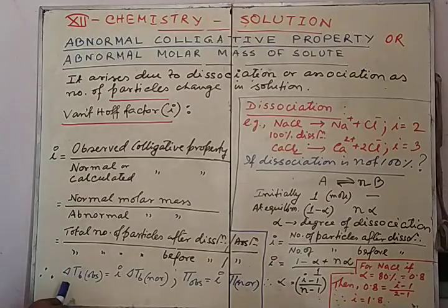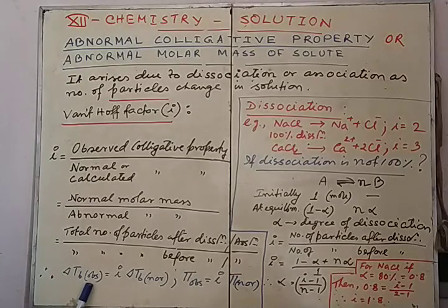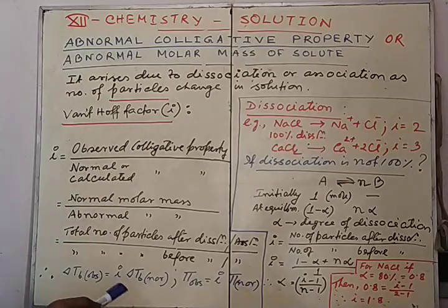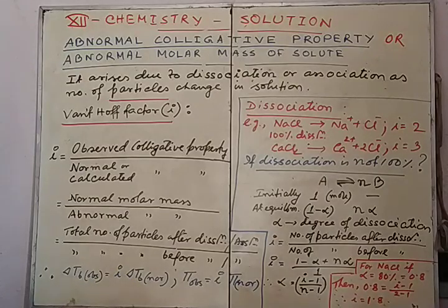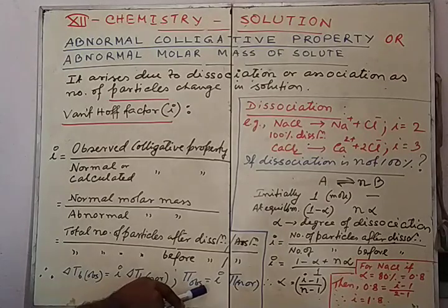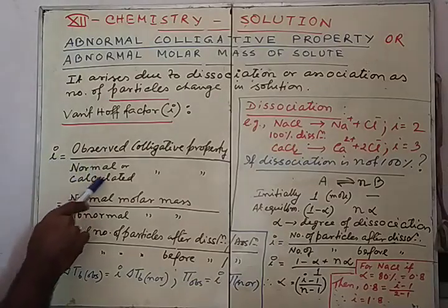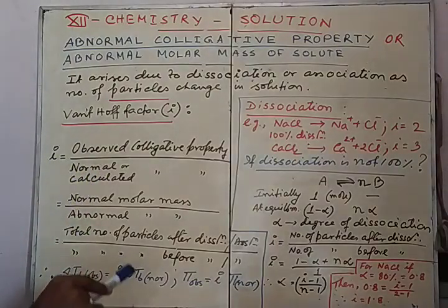Now, taking the example of ΔTb, the elevation in boiling point: the observed value equals I times the normal value, that is ΔTb without dissociation or association. Similarly, for osmotic pressure π, π observed equals I times π normal. The same relations can be written for the other colligative properties as well.